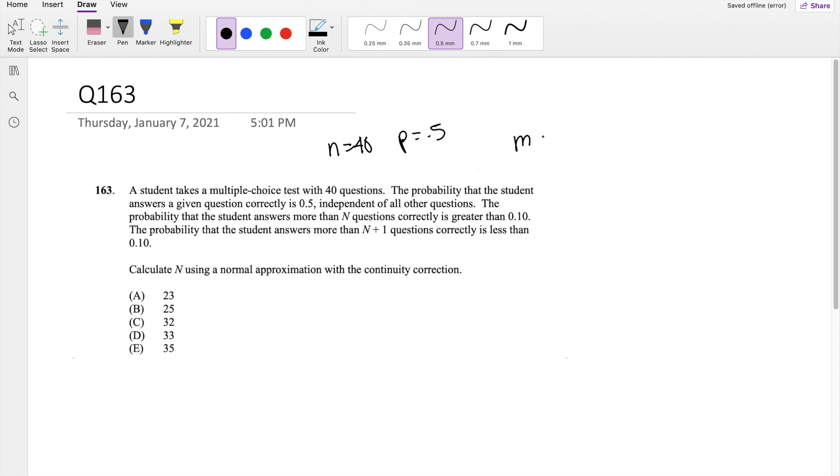So you know for a binomial distribution, the mean equals n times p. So in our case, this is going to be equal to 40 times 0.5, which equals 20. And for the variance of a binomial distribution, the formula is n times p times q. So in our case, this is going to be 40 times 0.5 times 0.5, which equals 10. So then the standard deviation is just the square root of variance, which is square root of 10.